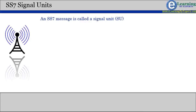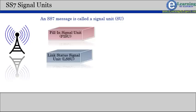An SS7 message is called a signal unit. There are three kinds of signal units: fill-in signal units, link status signal units, message signal units.